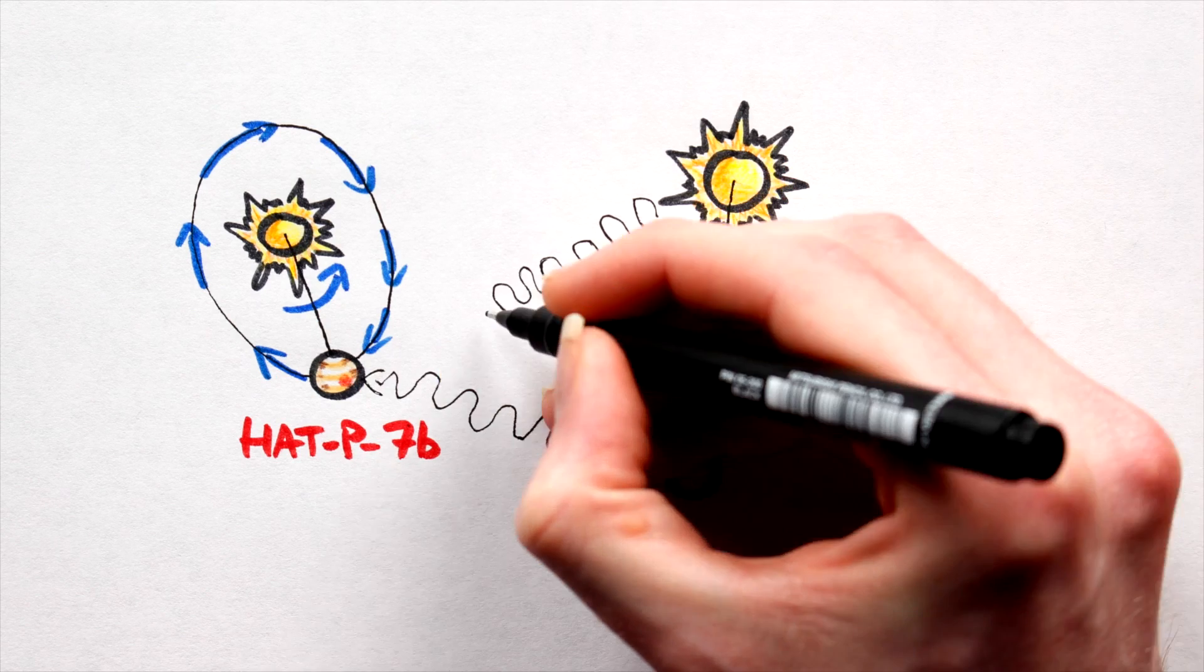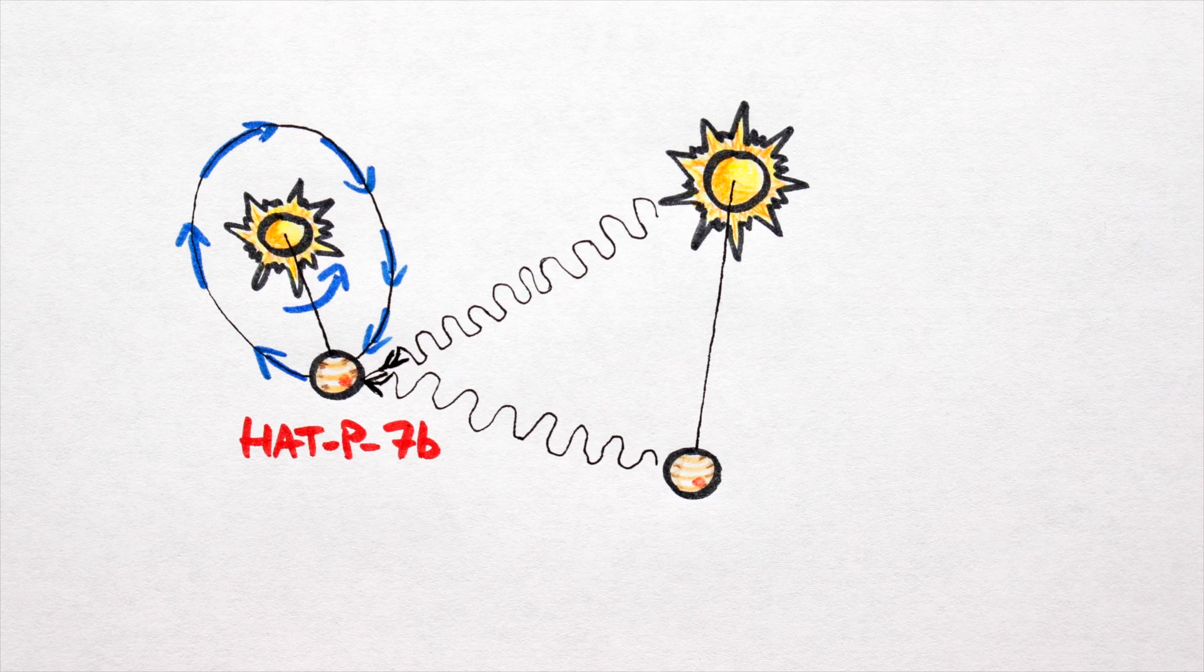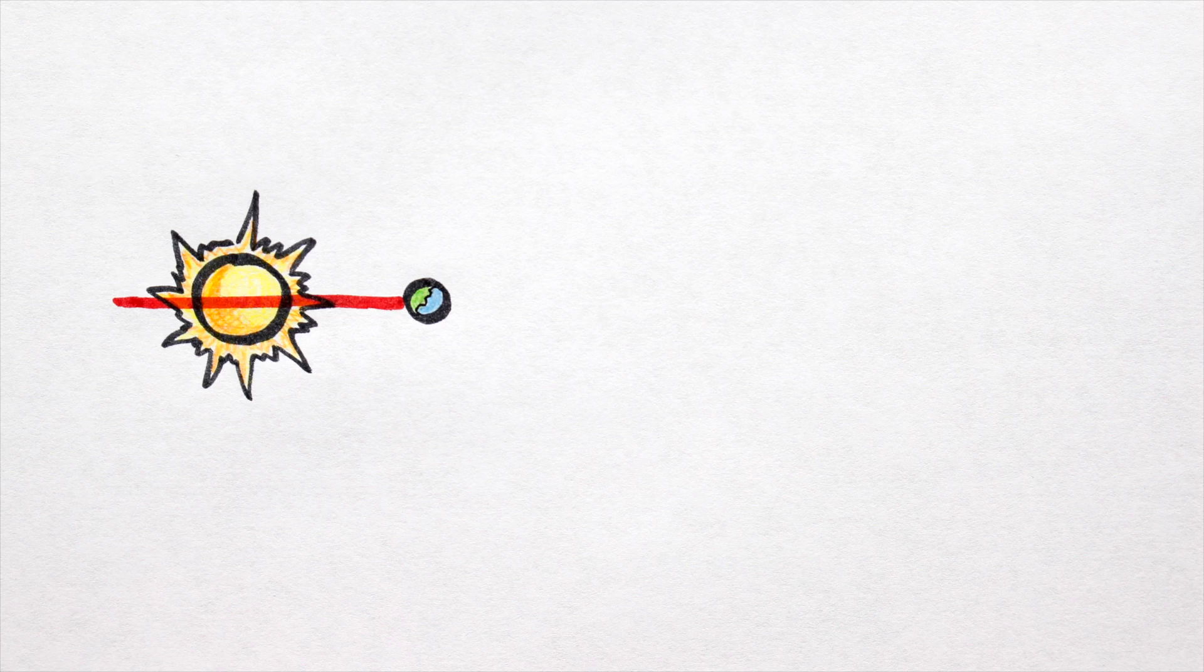It is the gravitational interference from the companion and its planet that is thought to be responsible for the upkeep of Hat P7b's backwards orbit. All things considered, I'll give our planet a prograde orbit and an inclination of, you guessed it, 0 degrees.